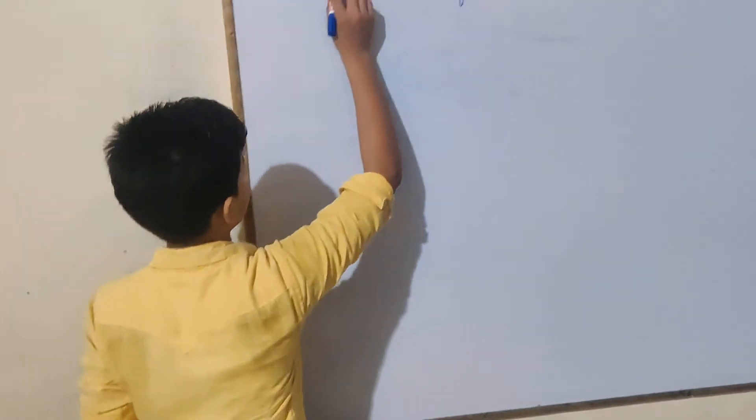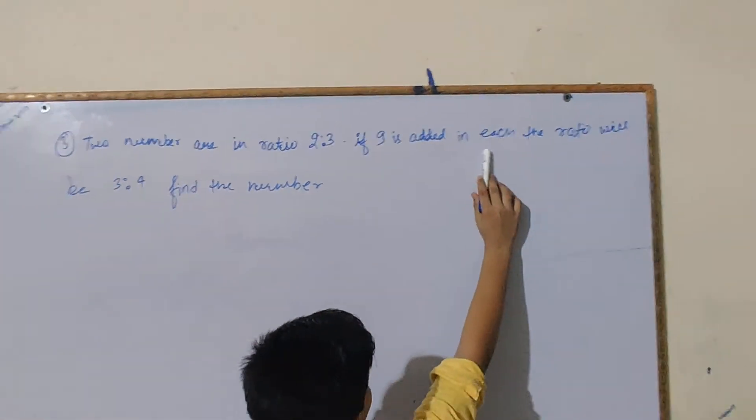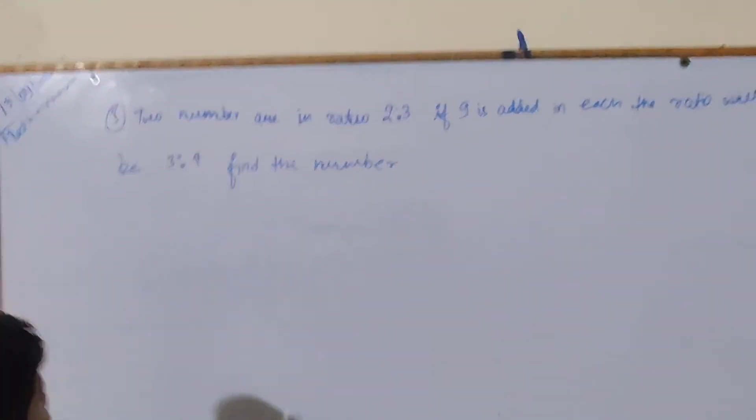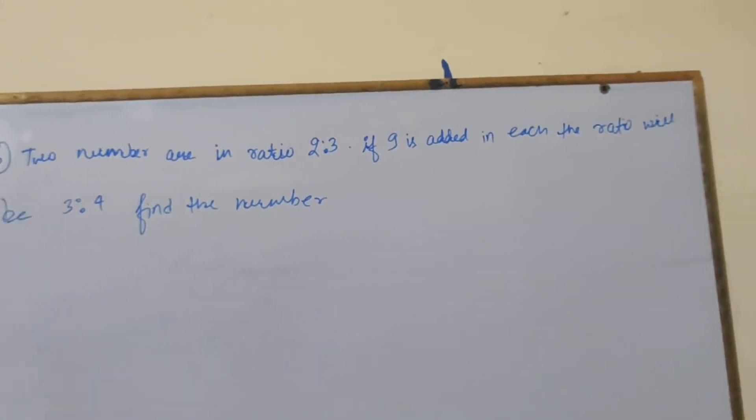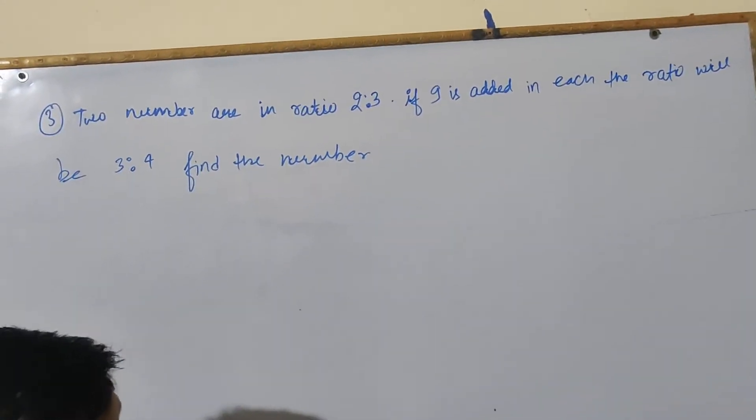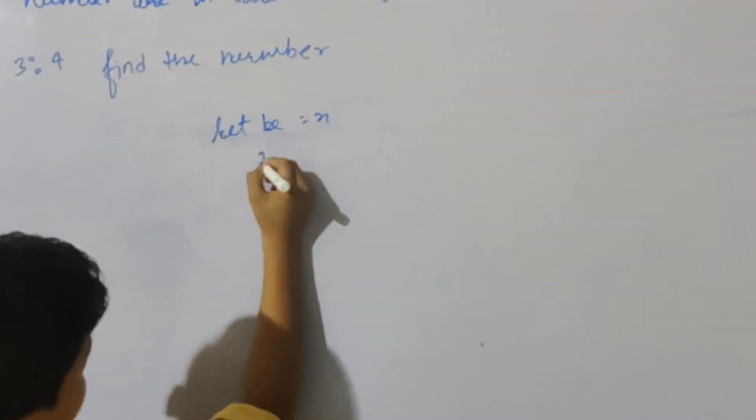Question 3: Two numbers are in ratio 2:3. If 9 is added to each, the ratio will be 3:4. Find the numbers. Here are two numbers in ratio 2:3. Let them be 2x and 3x.